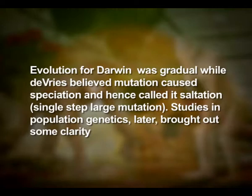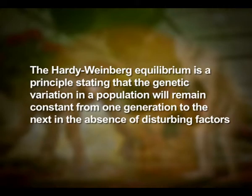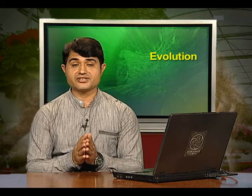Studies in population genetics later brought out some clarity. The Hardy-Weinberg principle — also known as the Hardy-Weinberg equilibrium model, or Hardy-Weinberg law — states that genetic variation in a population will remain constant from one generation to the next in the absence of some disturbing factors. Allele and genotype frequencies in a population will remain constant from one generation to the next in the absence of other evolutionary influences.